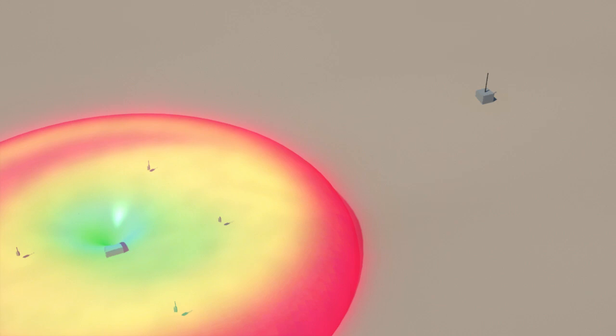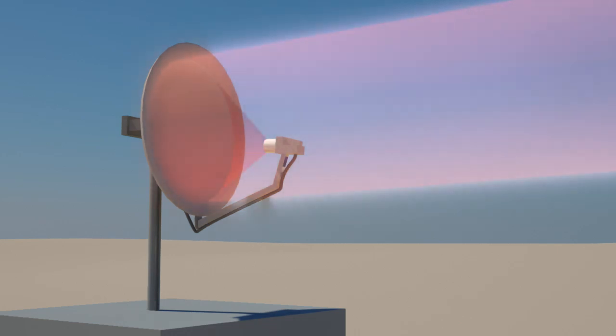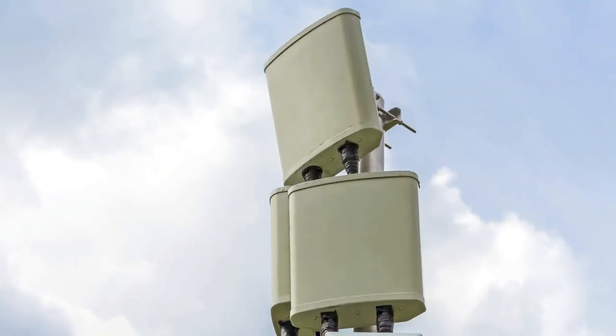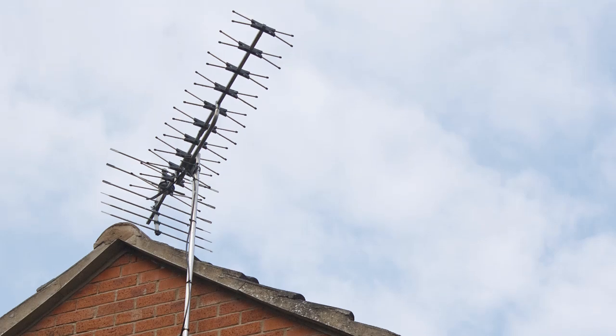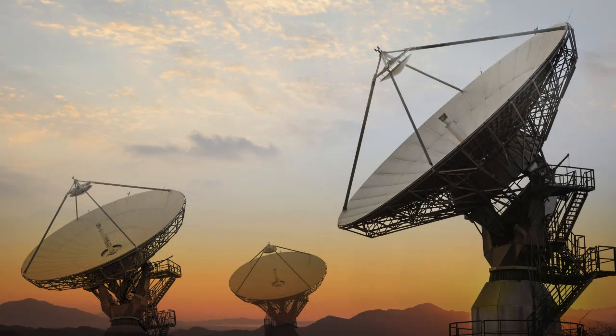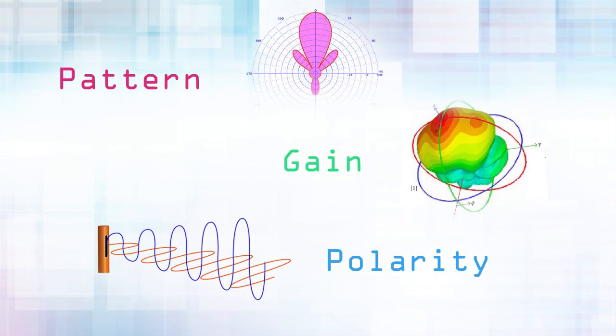However, omni antennas don't have the straight-line range of directional antennas. Directional antennas can send and receive signals from significantly greater ranges than omni types, but are constrained to communicating only within the path of their beam. There are many different kinds of antennas designed for a variety of applications and circumstances, but all types are categorized by three important electrical characteristics: antenna pattern, antenna gain, and antenna polarity.